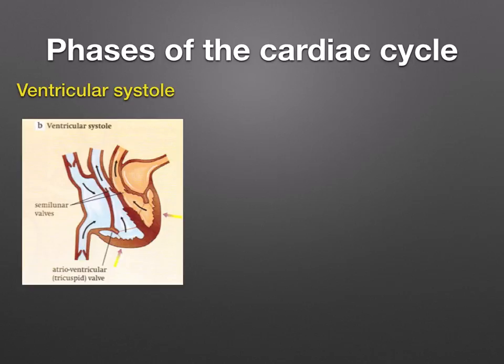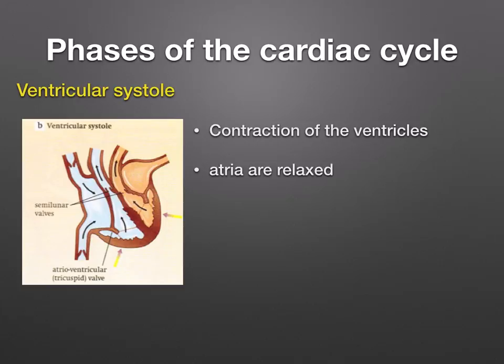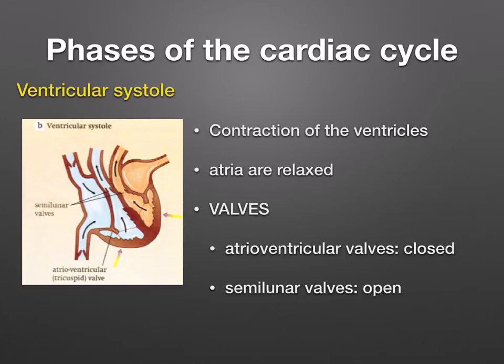In ventricular systole, after a short delay, the ventricles contract simultaneously. This increases the blood pressure within them, forcing shut the atrioventricular valves and preventing the backflow of blood into the atria. In this phase, the atria are relaxed, the atrioventricular valves are closed, and the semilunar valves are open. That 'lub' sound when you hear the heartbeat is these valves closing. The semilunar valves are then forced open, pushing blood into the aorta and the pulmonary artery.